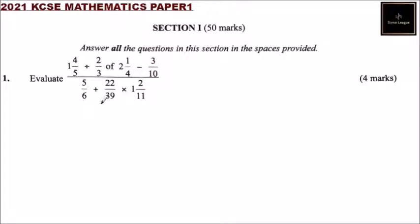So this is the first question of 2021 KCSE Mathematics Paper 1. This is section 1 consisting of 50 marks.